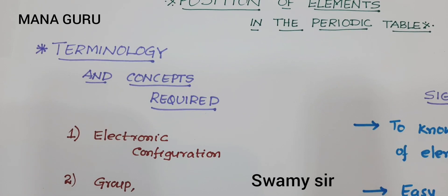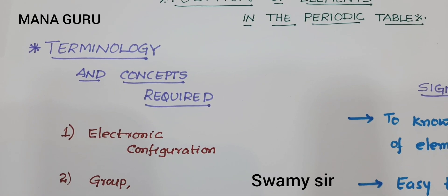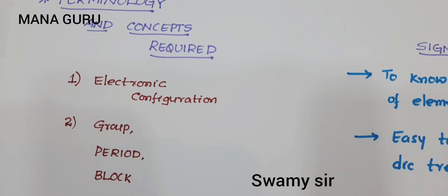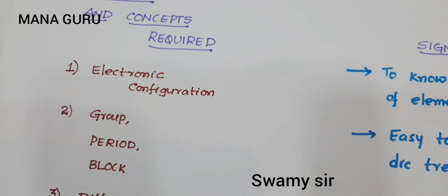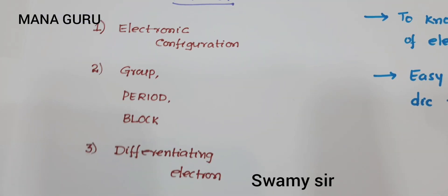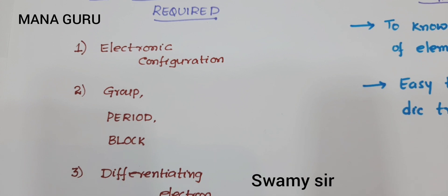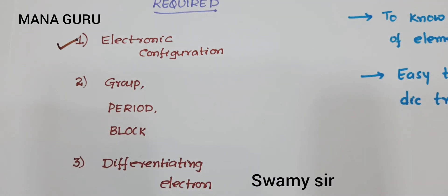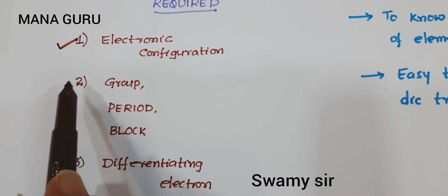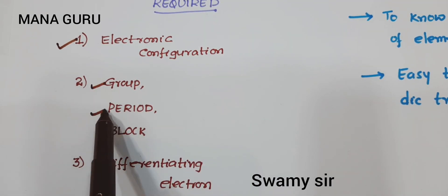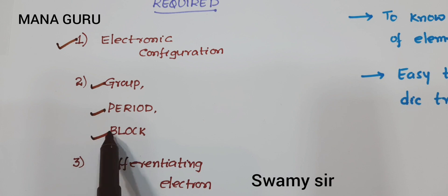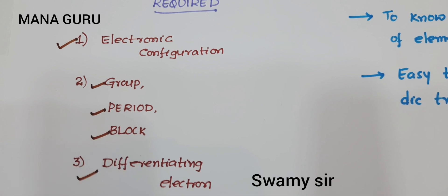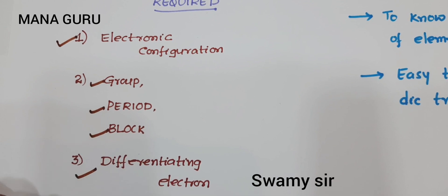Here we want to know some terminology. What is the terminology required here? Number one is the electronic configuration. Number two is the group, period, block, and the differentiating electron. Electronic configuration and what is called group, period, block, and differentiating electron — it is better to understand.